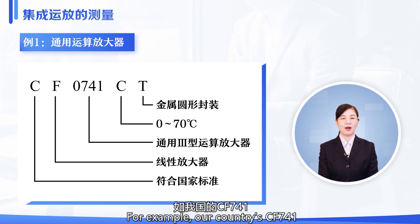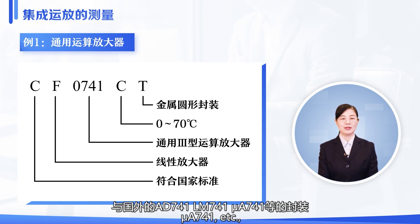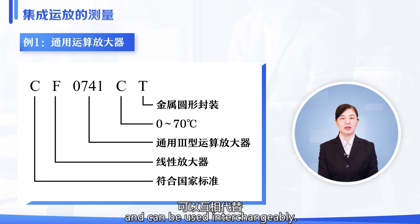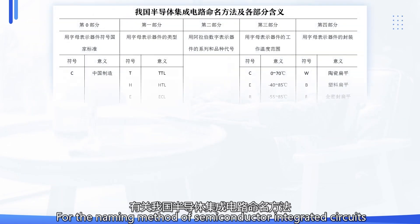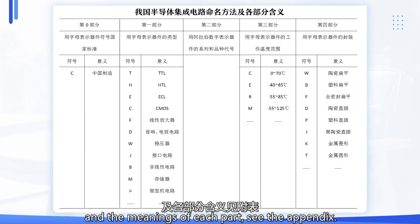For example, our country's CF441 is completely the same as foreign AD741, AM741, MU A741, etc. In terms of packaging, pin arrangement, function, and performance indicators, they can be used interchangeably. For the naming method of semiconductor integrated circuits in our country and the meanings of each part, see the appendix. Some of our models are named according to the standards of the Ministry of Electronics Industry. The first letter is F. The part following F is different from the international standard, but the technical standards are the same as international ones.